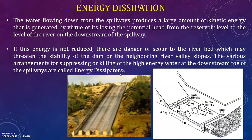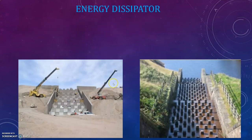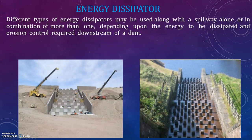Short blocks, baffle blocks, and sills are structures that reduce the kinetic energy generated by the head from the reservoir level. Different types of energy dissipators may be used along with a spillway alone or in combination of more than one, depending upon the energy to be dissipated and erosion control required downstream of a dam.